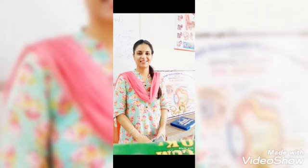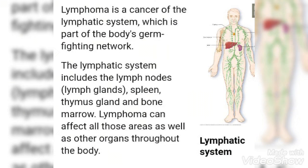Firstly I would like to differentiate with the topic leukemia, as many students get confused. Leukemia is a condition where there is proliferation of hematopoietic cells of the bone marrow — there is malignant growth and too much multiplication, and these cells then spill into the blood. Whereas lymphoma is a cancer of the lymphatic system, which is a part of the body's germ-fighting network.